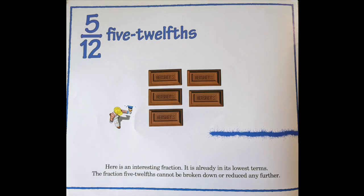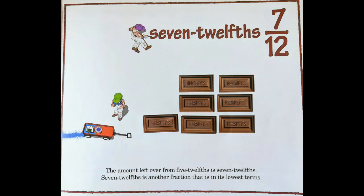Five twelfths. Here's an interesting fraction — it is already in its lowest terms. The fraction five twelfths cannot be broken down or reduced any further. The amount left over from five twelfths is seven twelfths, which is another fraction that is in its lowest terms.